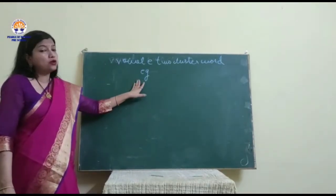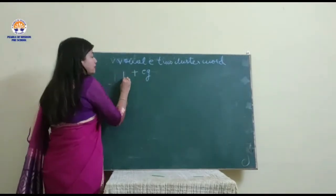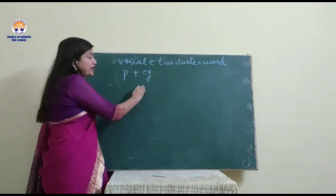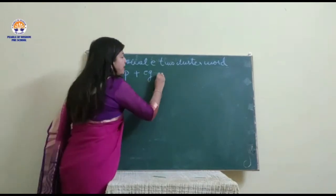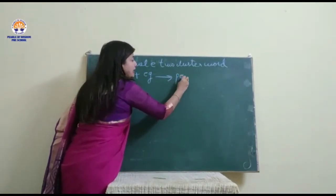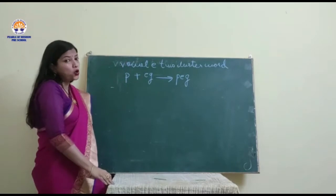Now, vowel E cluster word EG. By adding a consonant P in front of EG, what does it become? It becomes peg, and we use peg to dry clothes.